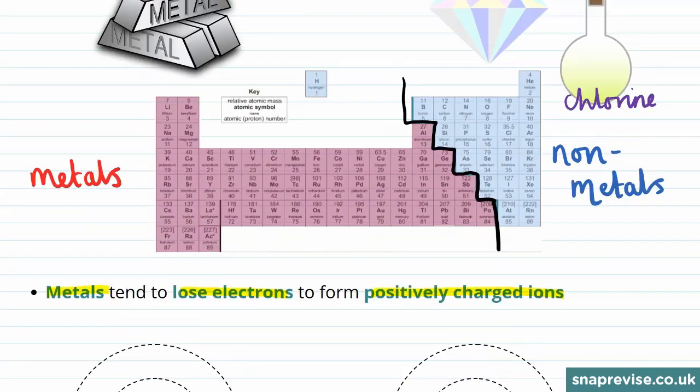For example, for beryllium, it's easier for beryllium to lose two electrons in order to get a full outer shell so that the first electron shell is full, rather than gain the six electrons that would be required in order for the second outer shell to be full.